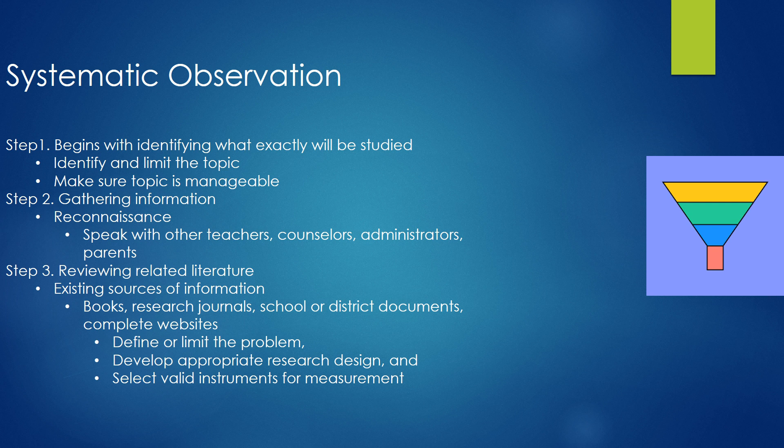Step three is reviewing related literature — looking at existing sources such as books, research journals, school or district documents, and websites like the What Works Clearinghouse or the National Professional Development Center. We want up-to-date research to support our understanding. Then we define and limit the problem — whether it's off-task behavior or inability to complete a motor skill — so we know when there's been a change, and we develop an appropriate research design and select valid instruments for measurement.